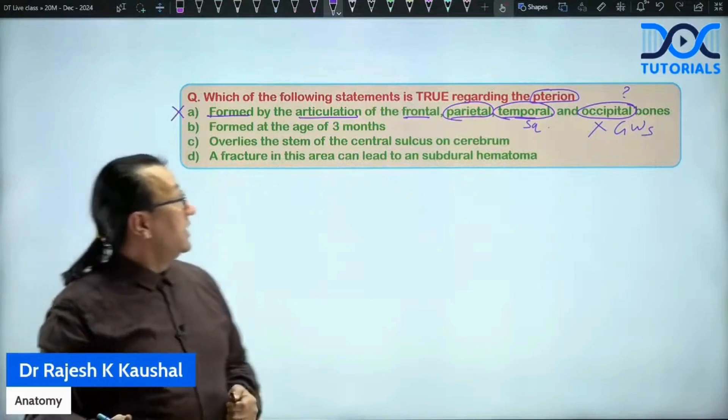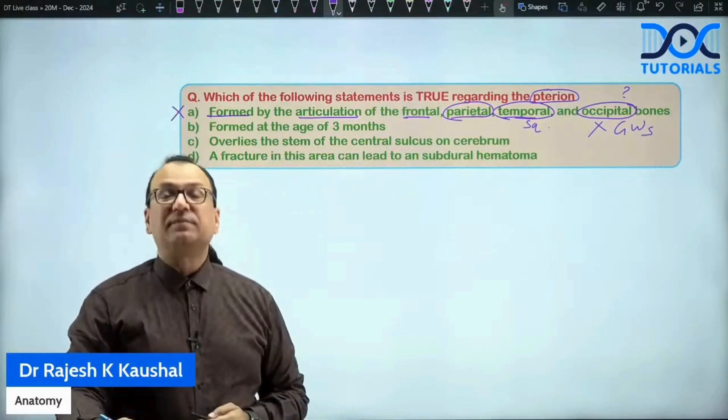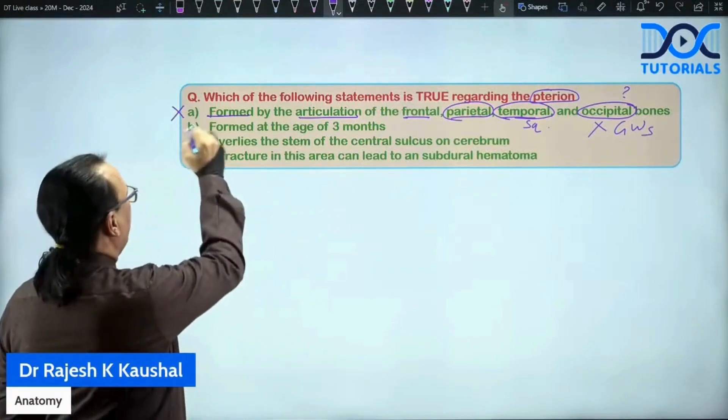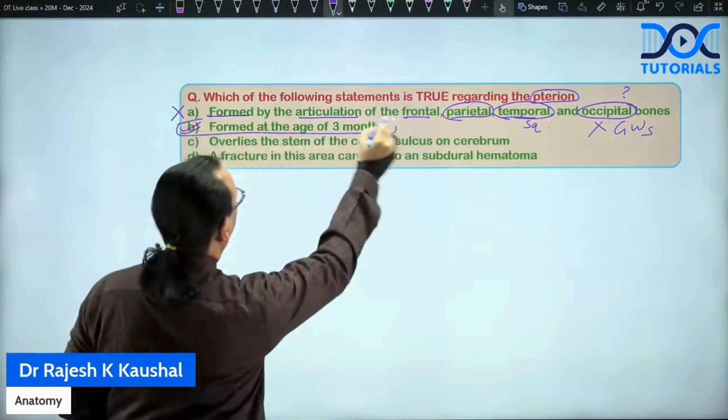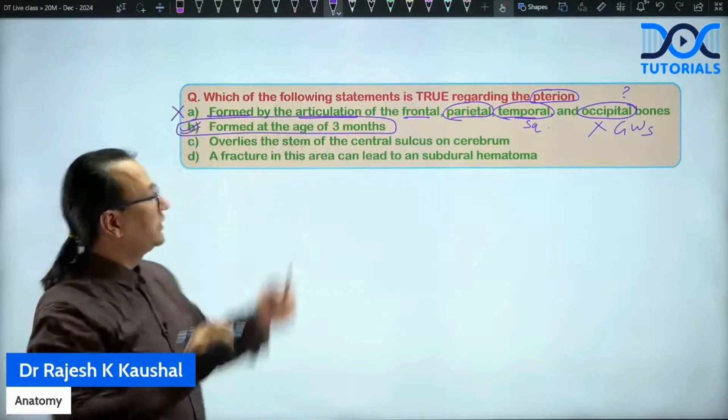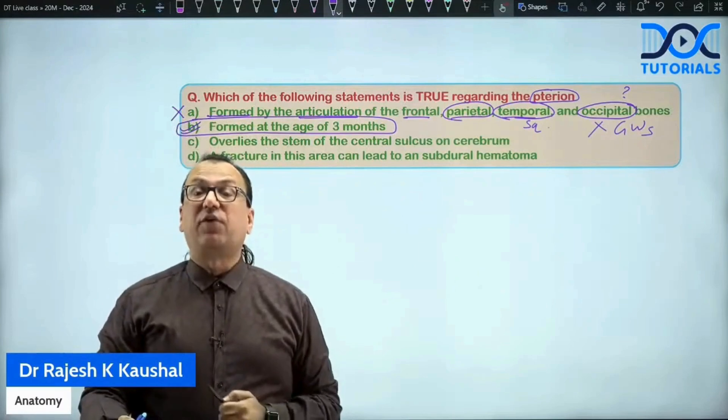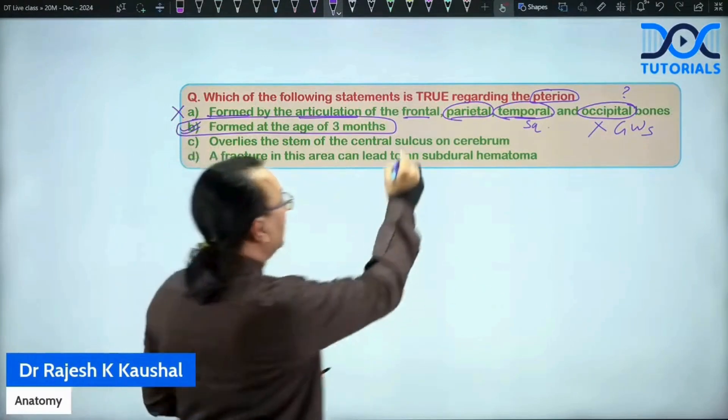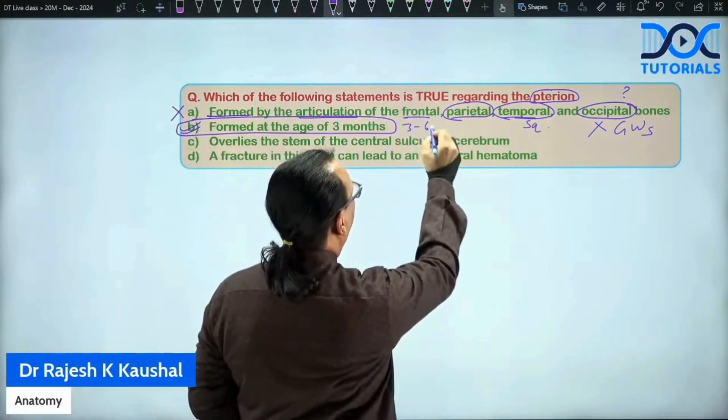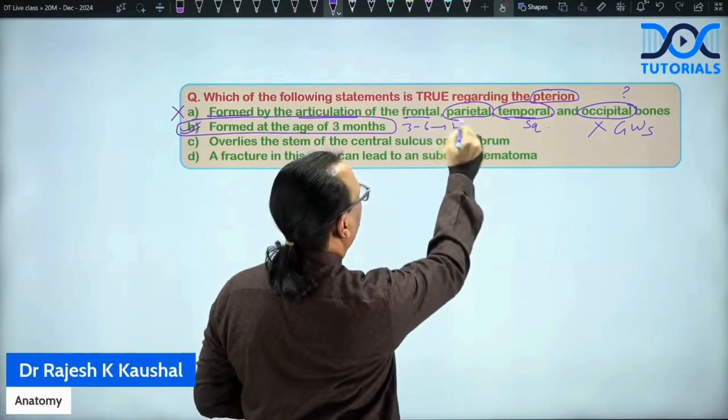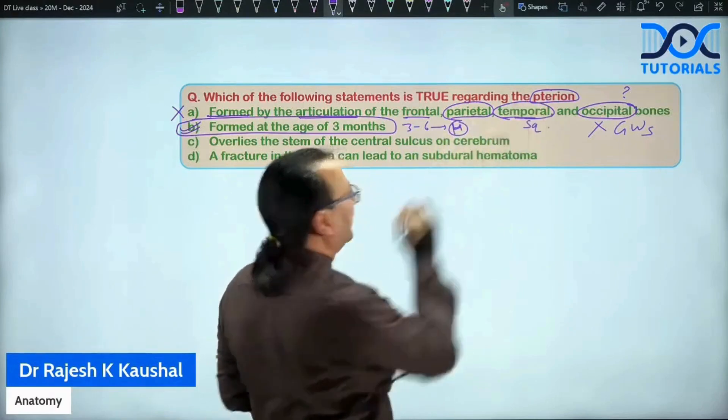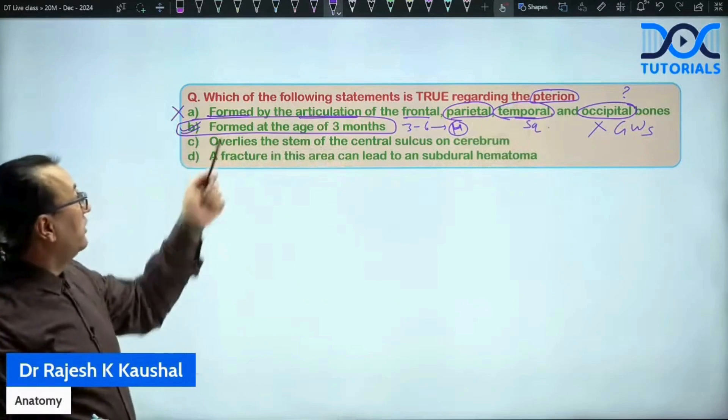What about option number B? Is it formed at three months? That is correct. And that should be the answer. This should be the answer that is correct because we have mentioned, when the anterolateral fontanelle will close, it is three to six months. So, when it will close, what will come in that place? In that place, the H-shaped suture and what is that H-shaped suture, the pterion. So the answer to this question will be choice number B.